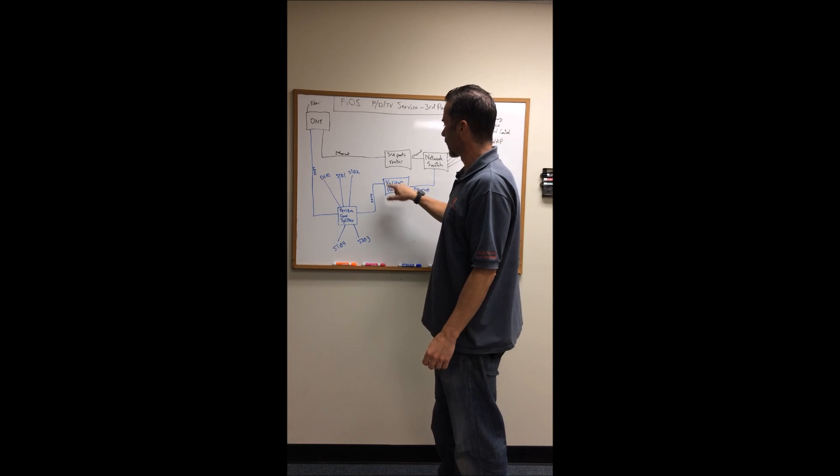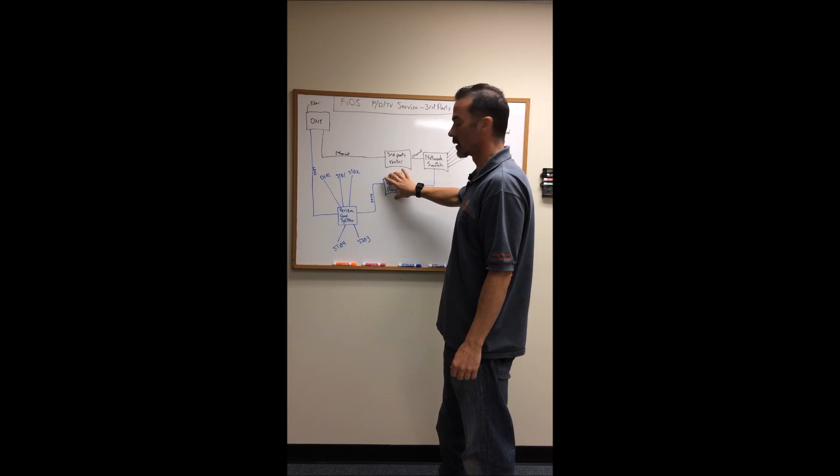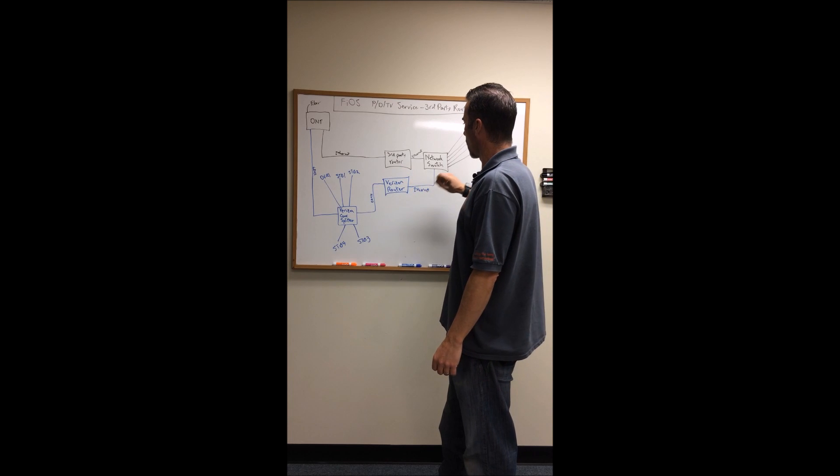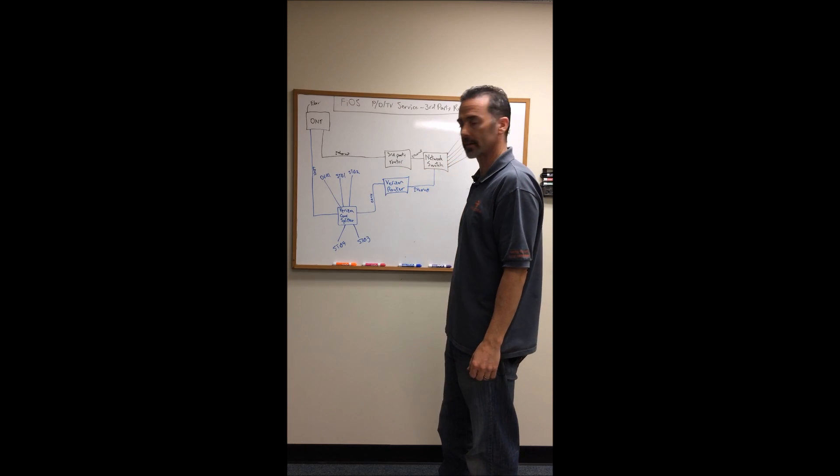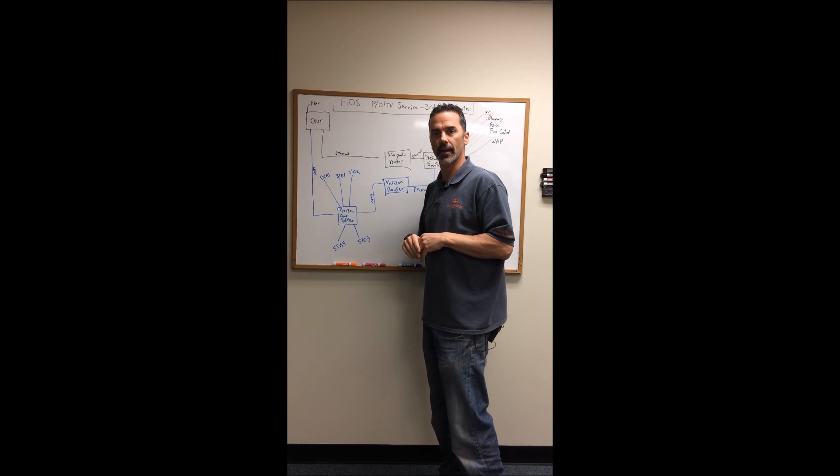So this is going to feed a coax splitter which all of your set top boxes and DVRs are connected to and then one of the inputs on the Verizon splitter is going to be your router which you're going to plug all your network connected stuff in. So that's their standard setup.